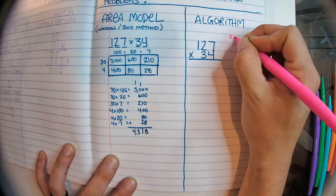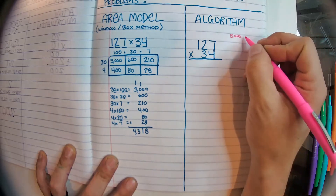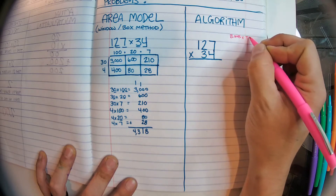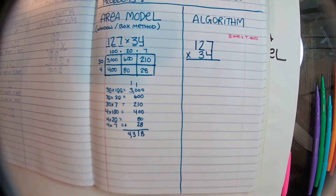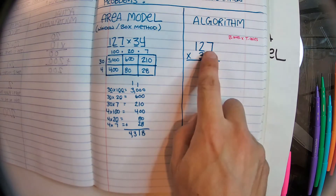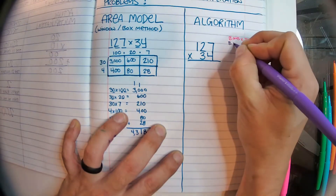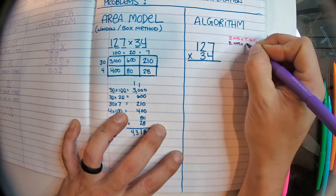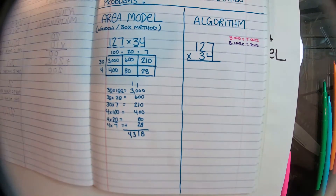First thing you're going to do is bottom ones times top ones — so bottom ones times top ones. Next thing you're going to do is bottom ones times the top tens.